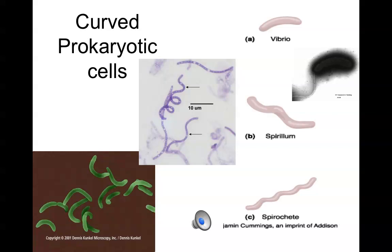We have additional terminology that microbiologists use to describe curved prokaryotic cell structure. If they're comma-shaped, we call them vibrio. If they're gently S-shaped or undulating, we call them spirillum. If they're tightly coiled and helical, we'd use the word spirochete.